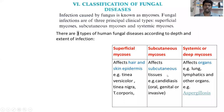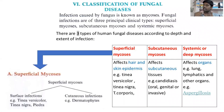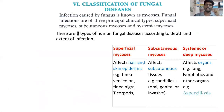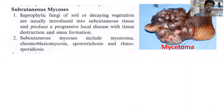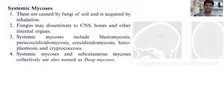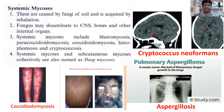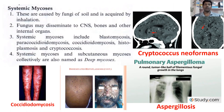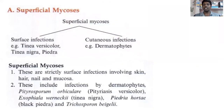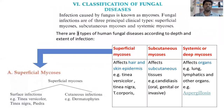A quick summary: we have superficial mycosis, subcutaneous mycosis, and systemic mycosis. Superficial mycosis includes surface infections and cutaneous infections. Subcutaneous mycosis includes mycetoma, chromoblastomycosis, and sporotrichosis. Systemic mycosis includes Cryptococcus neoformans infection, aspergillosis, histoplasmosis, and coccidioidomycosis — all affecting organs within the body.